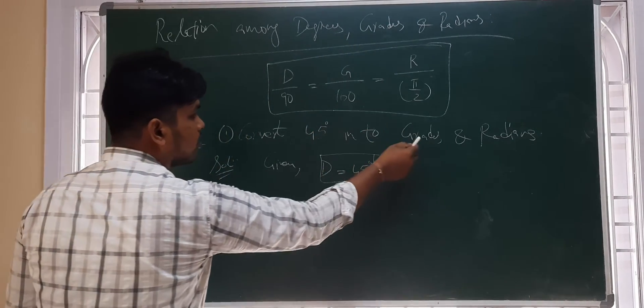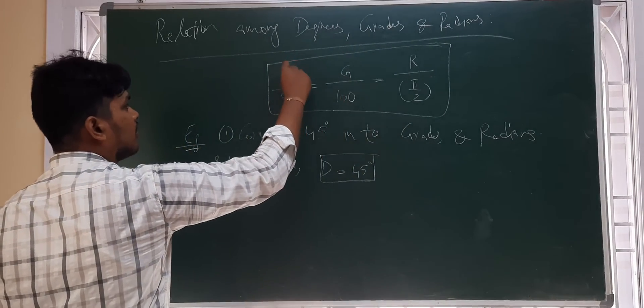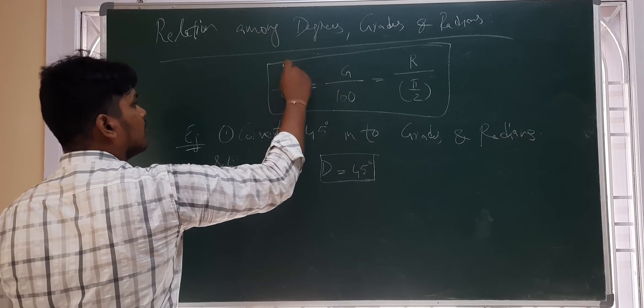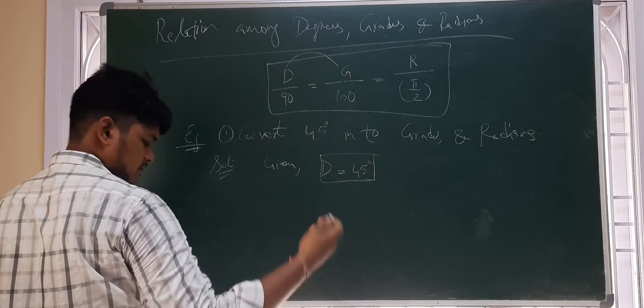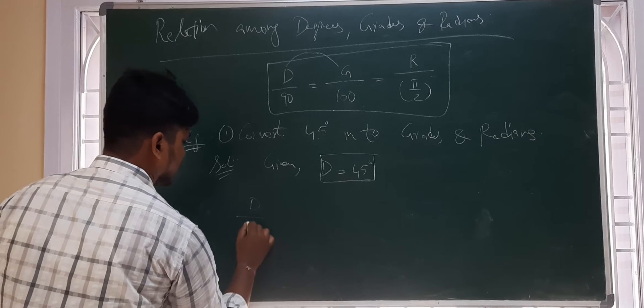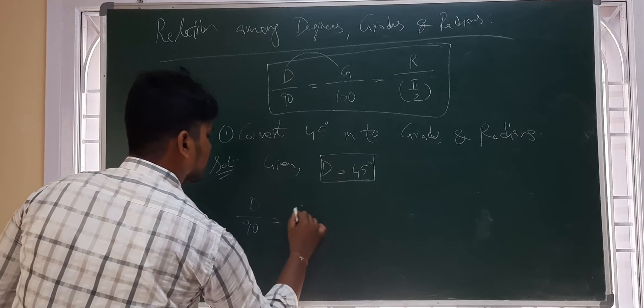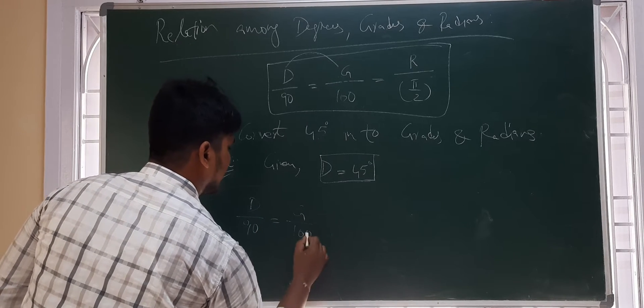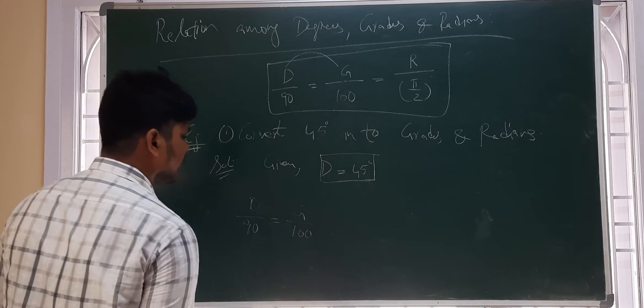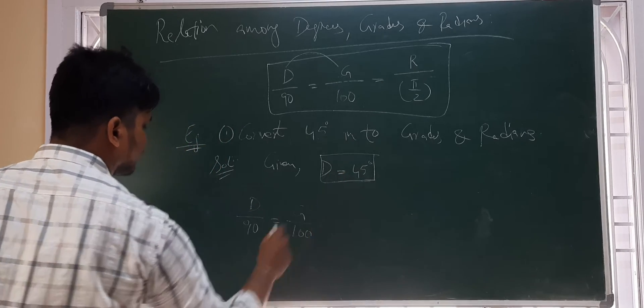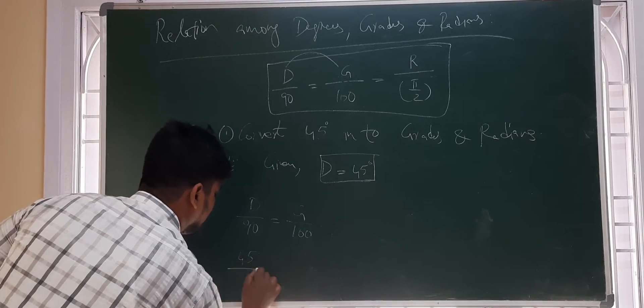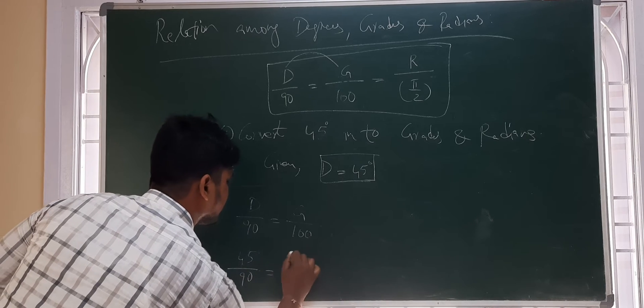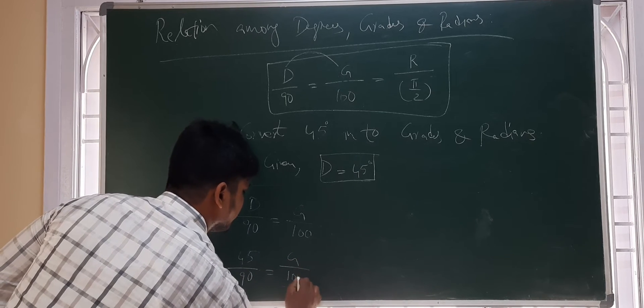Firstly, degrees into grades. What is the relation? D by 90 is equal to G by 100. What is D given as? 45 by 90 is equal to G by 100.